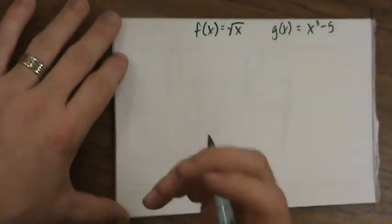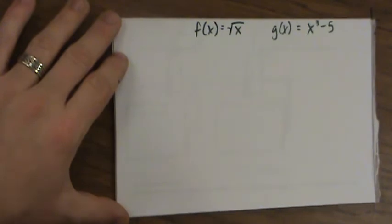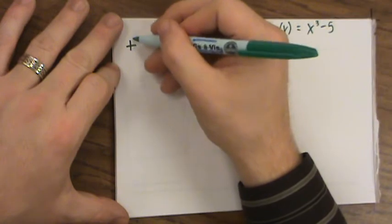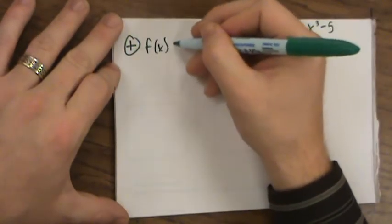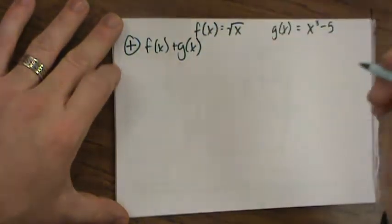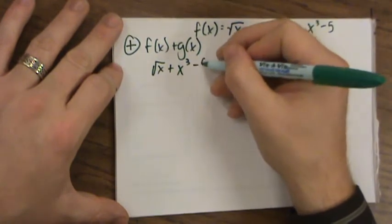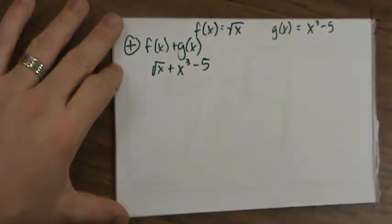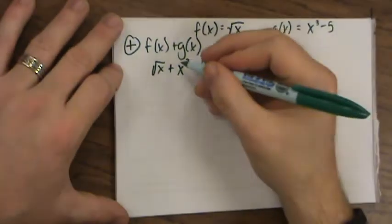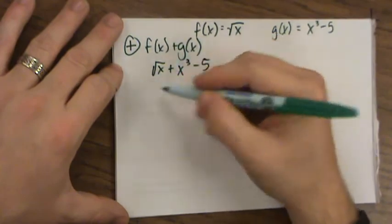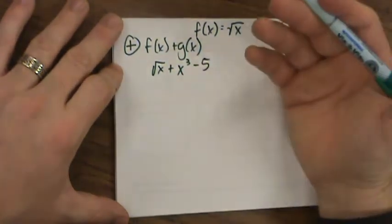We want to combine them in all of these different ways. First, we'll do the first four, adding, subtracting, multiplying, dividing. If I want to add them, that's f(x) plus g(x). That's the square root of x plus x to the third minus 5. There's no like terms there. All I'm doing is adding this function to this function. If there were like terms, I could combine them and that would be the end of it.